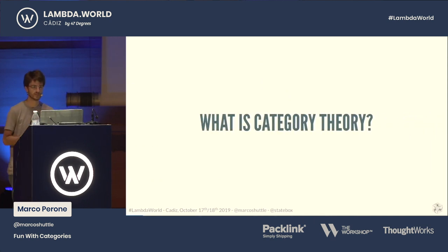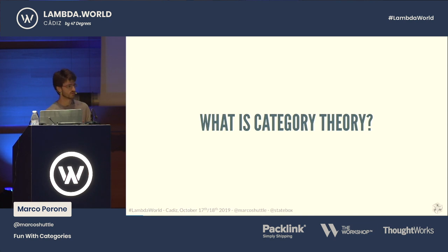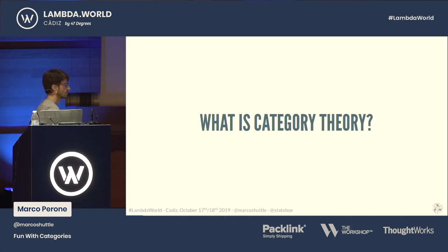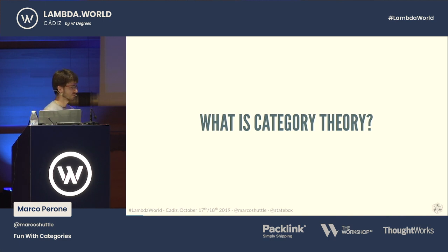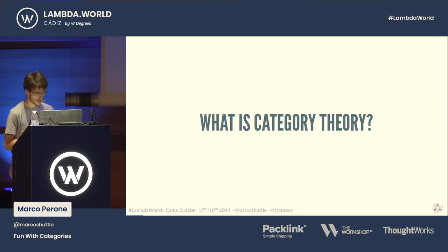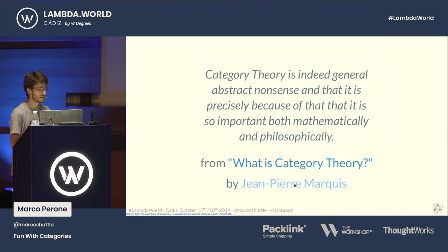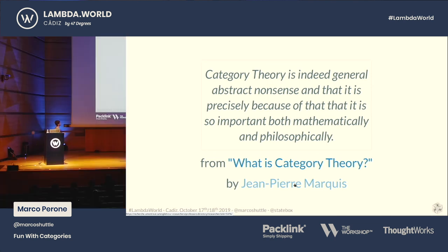So let's start from the very basic: what is category theory? I'm not going to repeat the definition — you probably know it and you've heard a lot of talks about category theory today. But I just want to mention that category theory is a field of mathematics that deals principally with composition and compositionality, which we all love in functional programming. But even among mathematicians, category theory is often known as some abstract nonsense. Looking around, I found a nice quote which says that category theory is indeed general abstract nonsense, and that it is precisely because of that that it is so important both mathematically and philosophically.